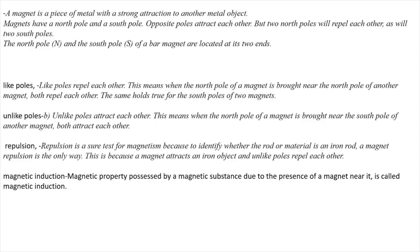Unlike poles attract; like poles repel. The North Pole and the South Pole of a bar magnet are located at its two ends. Each and every magnet, no matter how many pieces you break it into, will still have its North and South pole.